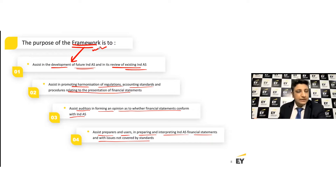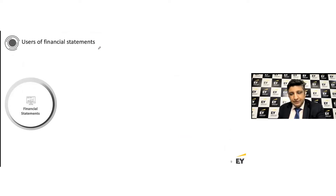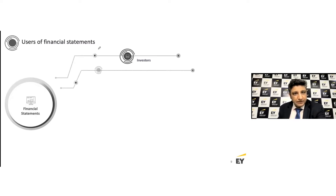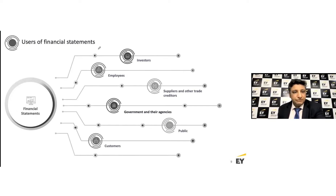So you need to really go back to the framework at each point in time. Users of financial statements — you can name those and that's what the list is all about. It could be a customer, it could be government, it could be providers of finance like a banking institution, or somebody who has invested in companies' debentures, for example. It could be employees, it could be shareholders. So there are multiple users of financial statements, and each such user has its own expectation.